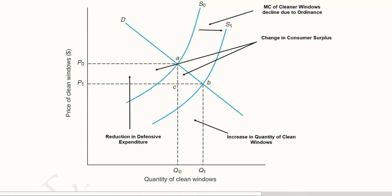Now we consider this diagram in which we have depicted the situation. On the x-axis, we have quantity of clean windows, and on the y-axis we have price of the clean windows in dollars. This is the demand curve for clean windows. This is S0, which is the first supply curve of the clean windows. It is basically the marginal cost of the cleaner windows. And there is a shift in this because of the decline in the pollution, and that will lead to an expansion of the supply curve of the cleaner windows.